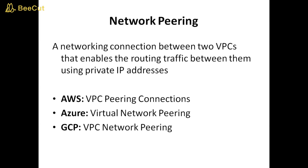Network peering: a networking connection between two VPCs that enables routing traffic between them using private IP addresses. AWS: VPC peering connections. Azure: virtual network peering. GCP: VPC network peering.